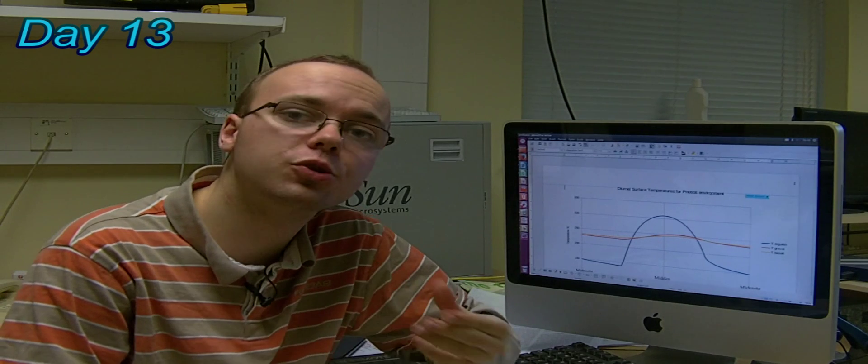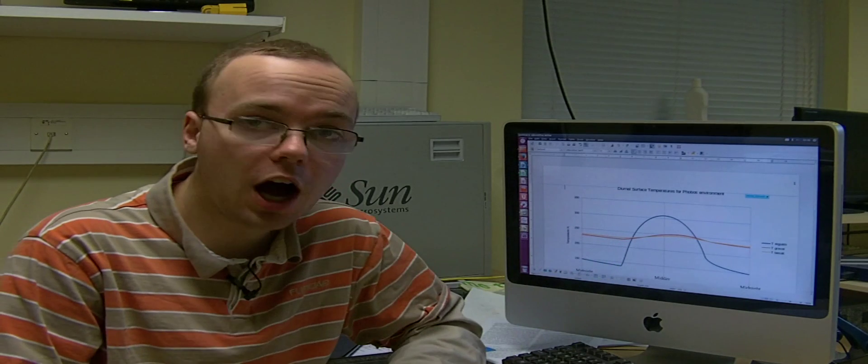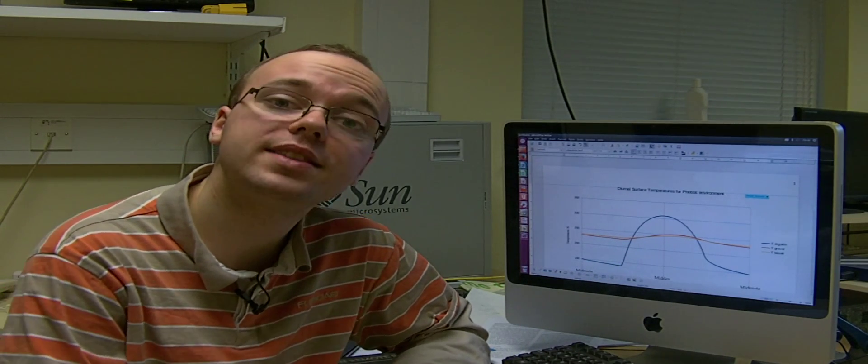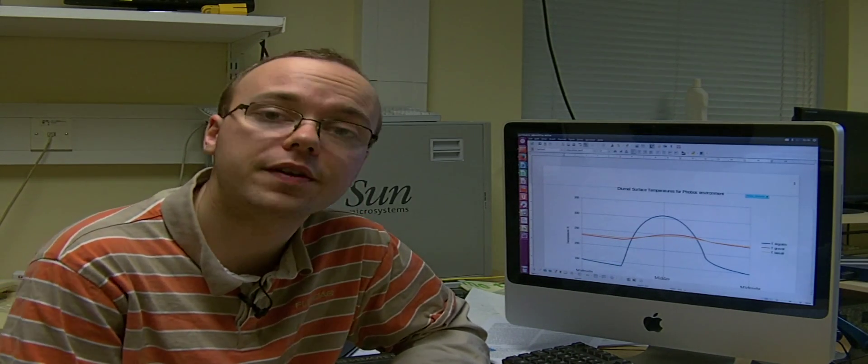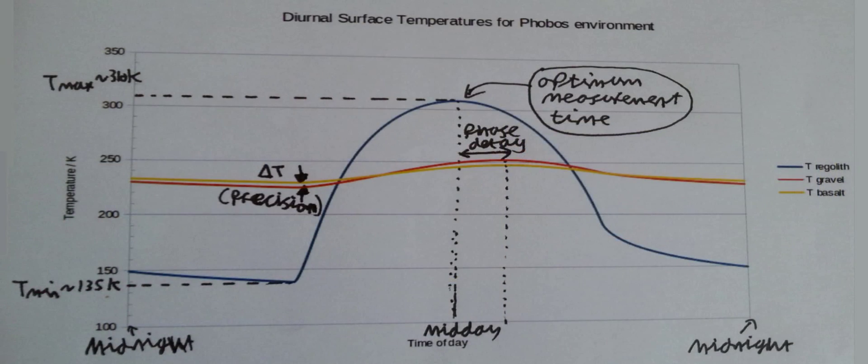It's day 13 and today I've been looking more into the thermal modelling of Phobos. As you can see here I've been working on generating the day-night temperature cycles for a number of different potential materials that we could see on Phobos. The first one with the huge variation is very fine-grained regolith, similar to the clay I've been preparing in the lab. That has very low thermal inertia and changes dramatically during the day. But contrast that to things such as gravel and basalt, these two curves which don't really vary that much during the day-night cycle.